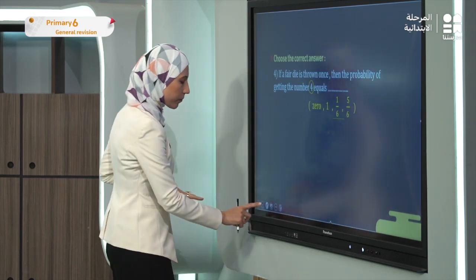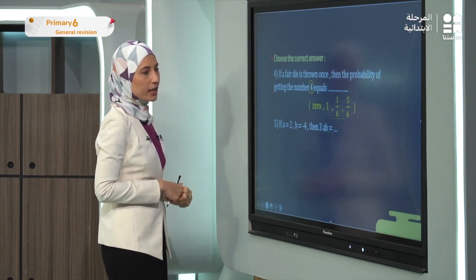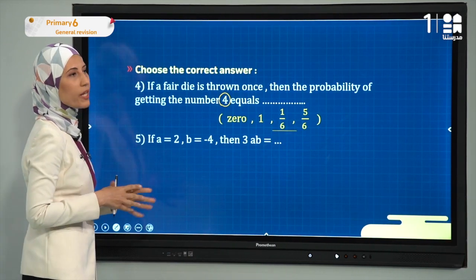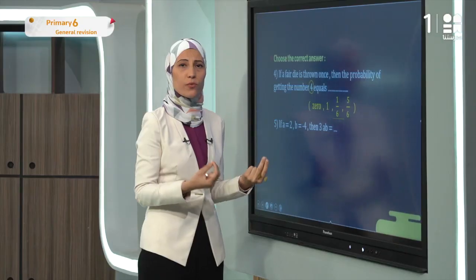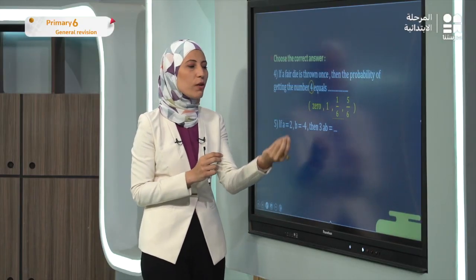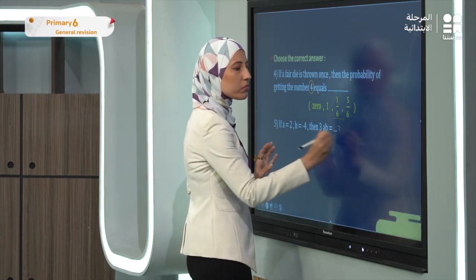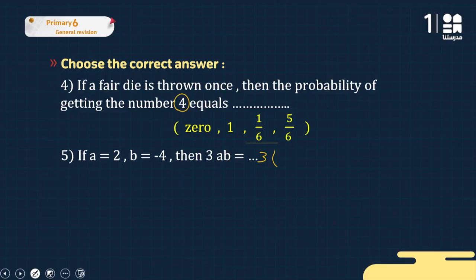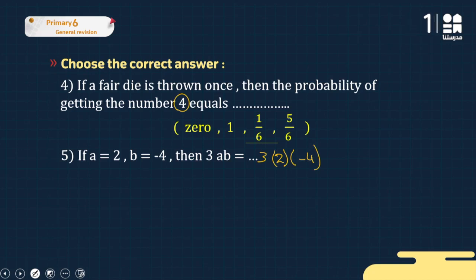Exercise five: if a = 2 and b = -4, find 3ab. I substitute: a = 2, b = -4. Then 3ab = 3 × 2 × (-4). First, 3 × 2 = 6, then 6 × (-4) = -24. The answer is -24.